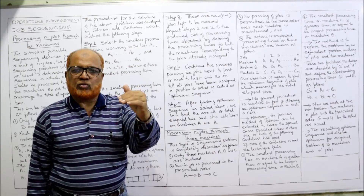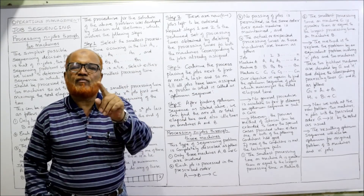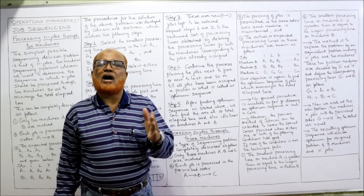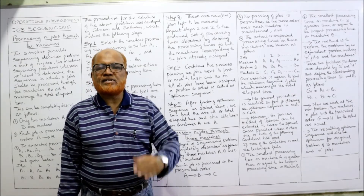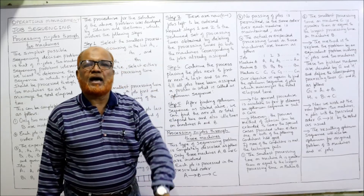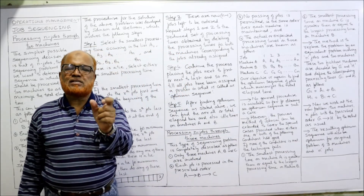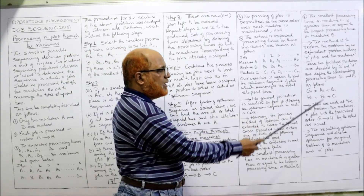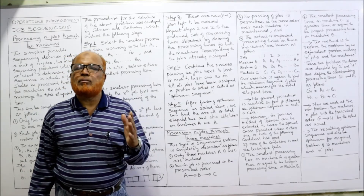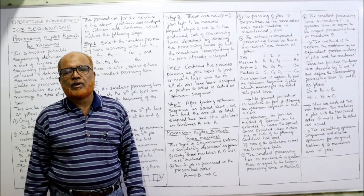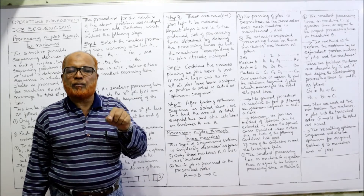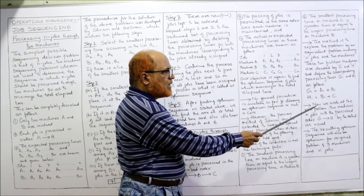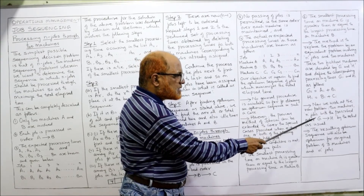So g1 = a1 + b1, g2 = a2 + b2, g3 = a3 + b3, and so on — combining A and B times gives the processing time for fictitious machine G. Similarly, for fictitious machine H: hi = bi + ci. So h1 = b1 + c1, h2 = b2 + c2, h3 = b3 + c3, and so on — combining B and C times gives the processing time for machine H.